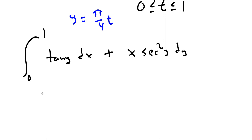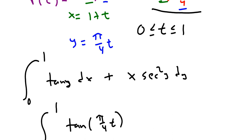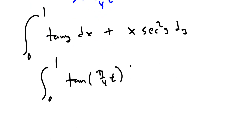So I'm going to plug those things in and see what happens. So integral 0 to 1, instead of writing tangent y, I'm going to write tangent of π/4 times t. dx means the derivative of the x term. But the derivative of the x term here is just 1 dt. So that's going to be dt.